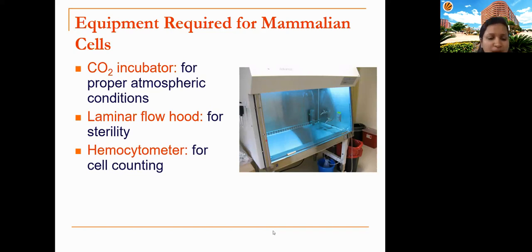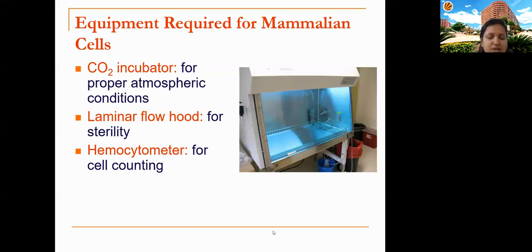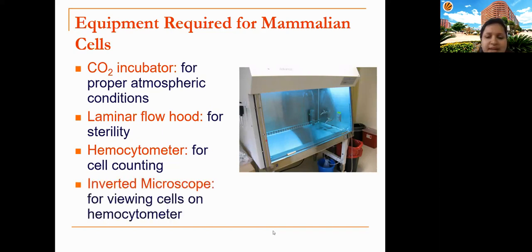To assess cell growth and confirm cells are actually increasing in number, we use a hemocytometer — the same instrument used in biochemical labs to count white blood cells in TLC/DLC tests. We can evaluate cell numbers using this instrument. We also need an inverted microscope to observe the cells and monitor their growth, which we will see in the laboratory demonstration.